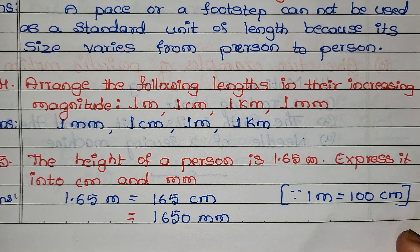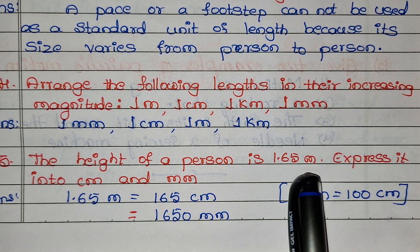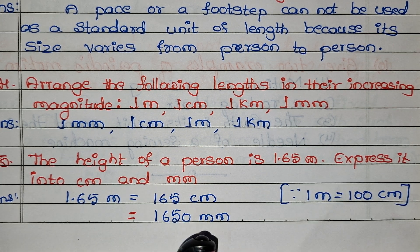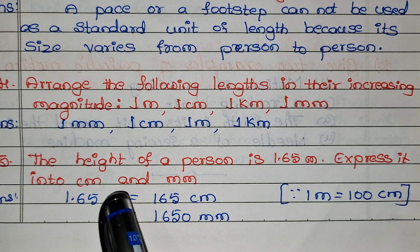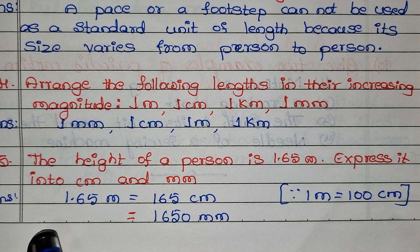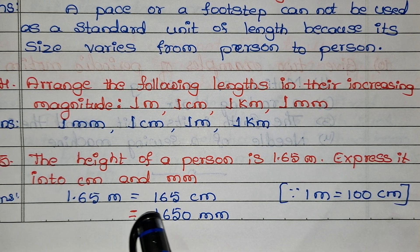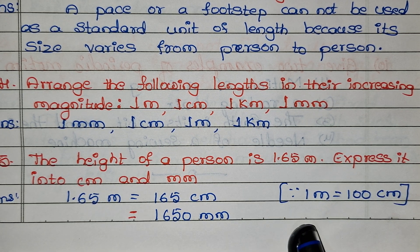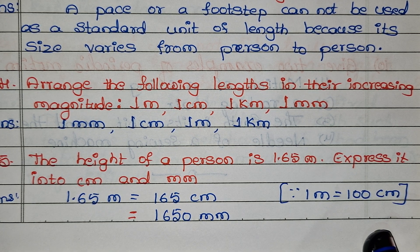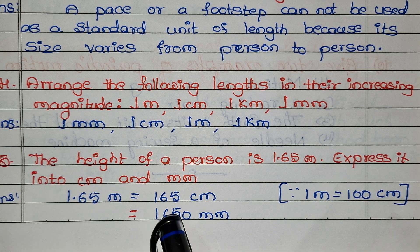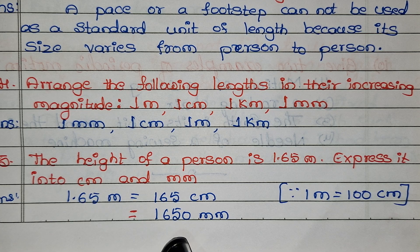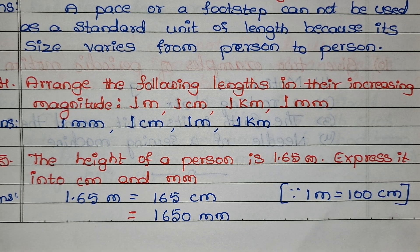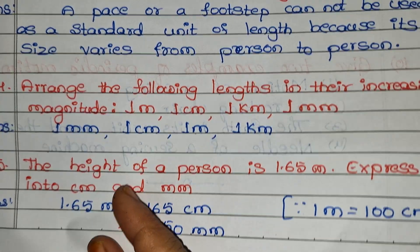The height of a person is 1.65 meters — express it in centimeters and millimeters. 1.65 meters equals 165 centimeters, because 1 meter equals 100 centimeters. In millimeters, 165 centimeters equals 1650 millimeters.